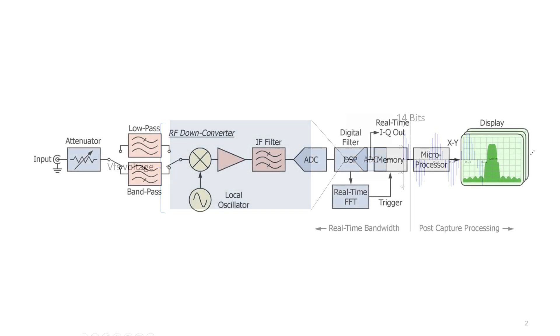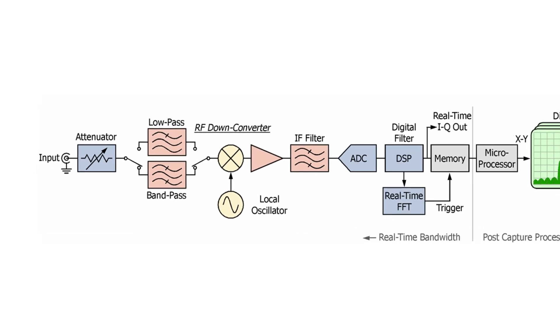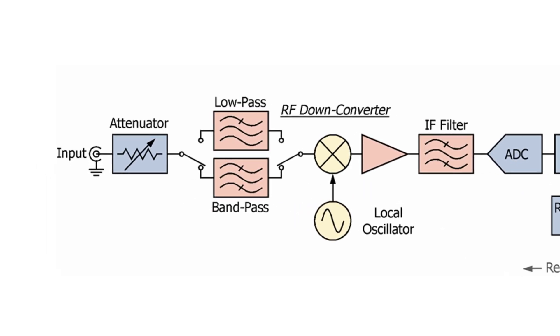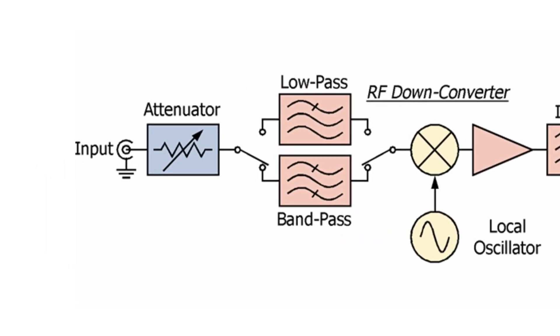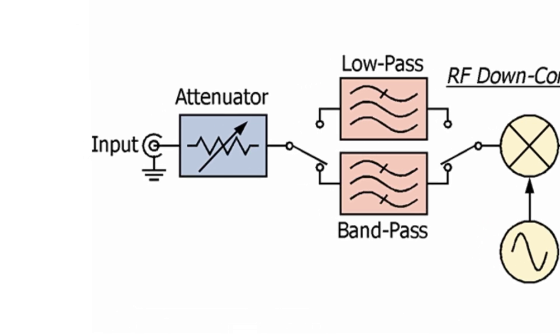For better operation, ADC should always get a signal amplitude level which is near to its full scale voltage. To maintain this, the Tektronix real-time spectrum analyzer will have a variable gain and attenuator before ADC to maintain signal level.